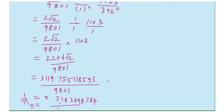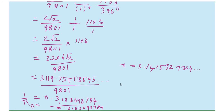Therefore Pi is equal to 1 by 0.31830987884, which equals approximately 3.1415927304 and so on. If we substitute k equals 1, 2, 3, and so on, we get more decimal places and greater accuracy. Thank you.